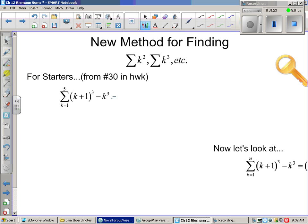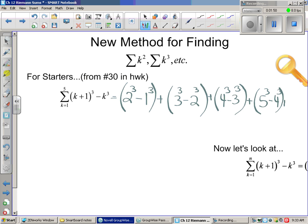So plug in one, you'd get (1+1)³, which is 2³, minus 1³, right? Plus, so that's the first term. Then the next one would be by plugging in two. So it's (2+1)³, which is 3³, minus 2³. And that would be the second term. Then we would do the third one, which would be (3+1)³, or 4³, minus 3³. And then we do the fourth term, which would be 5³ minus 4³. Let's see if I can squeeze this in here. It'd be 6³ minus 5³ as our last term.